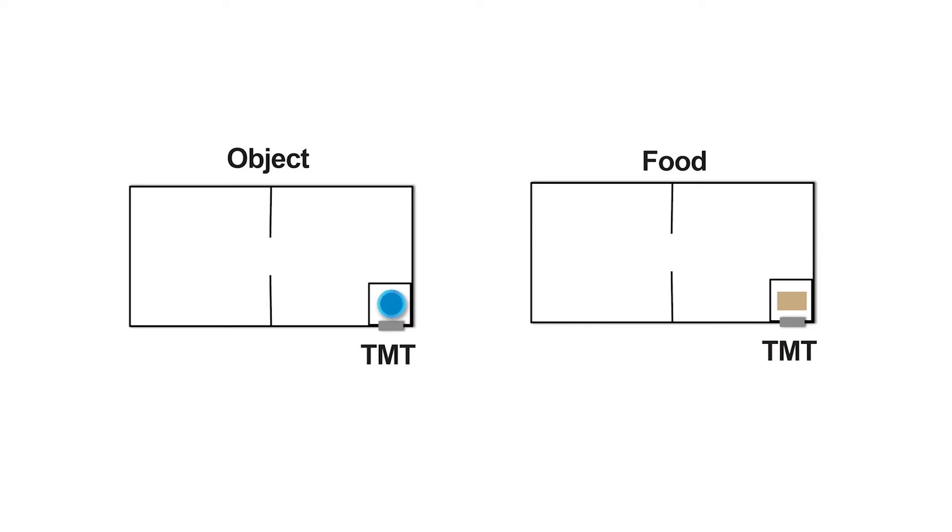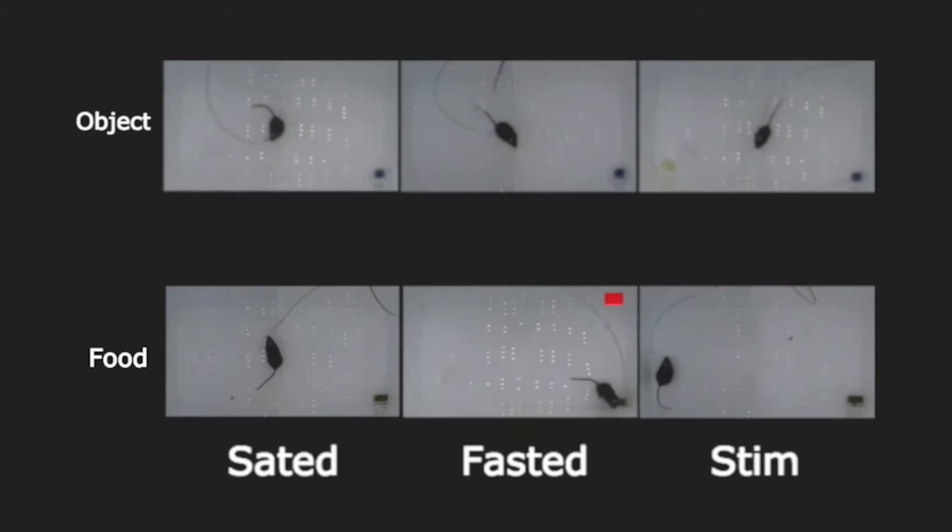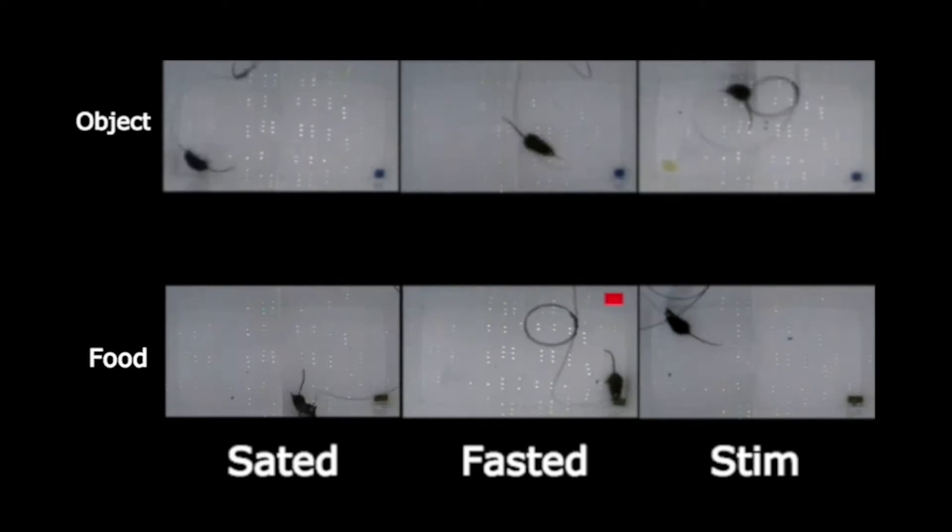In the absence of food, all mice avoided the TMT-paired chamber of the apparatus and spent minimal time with a non-food, non-salient object located in the TMT zone.